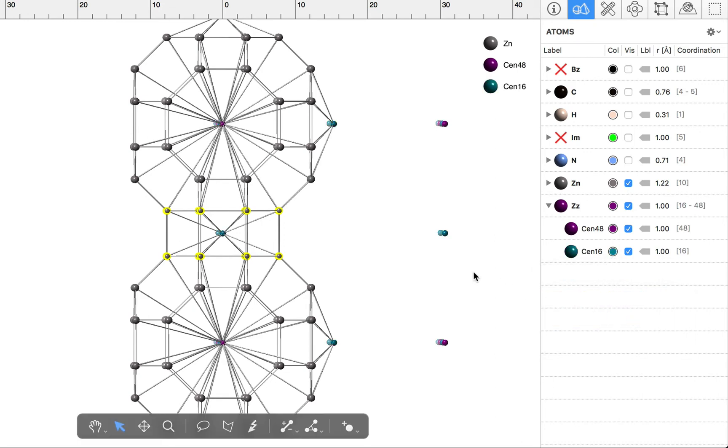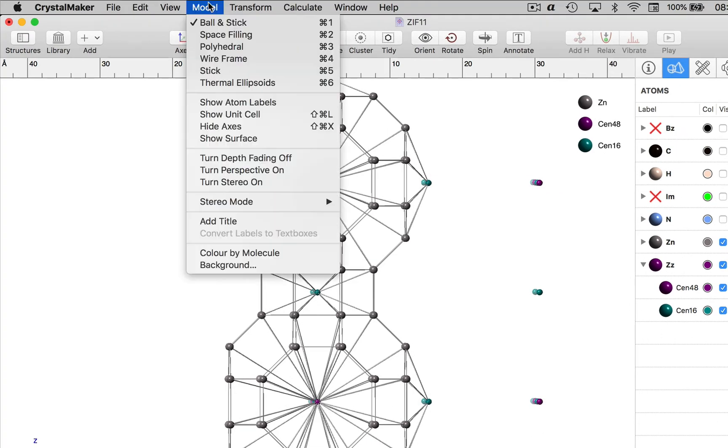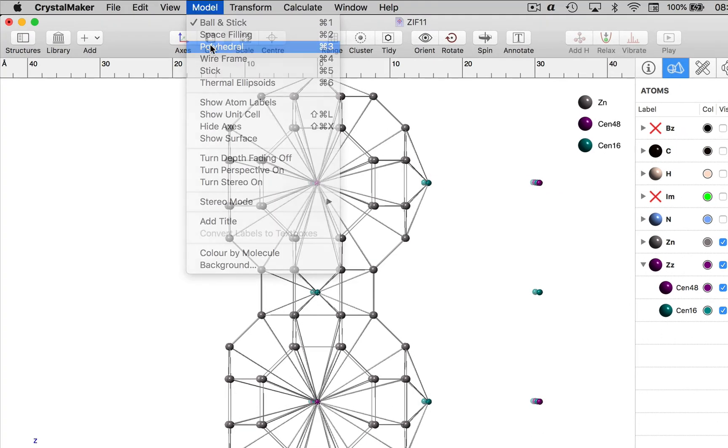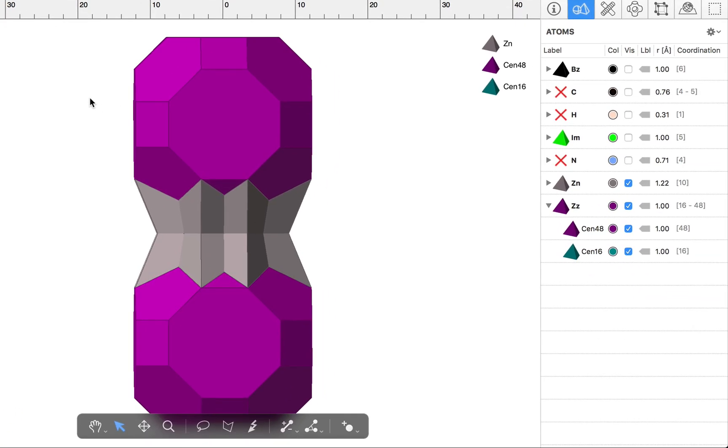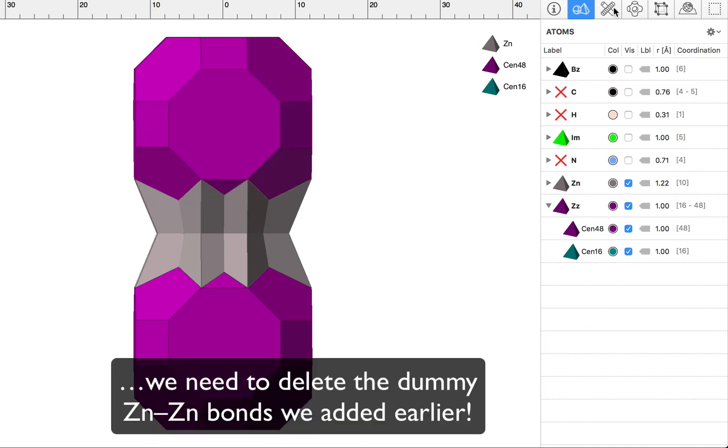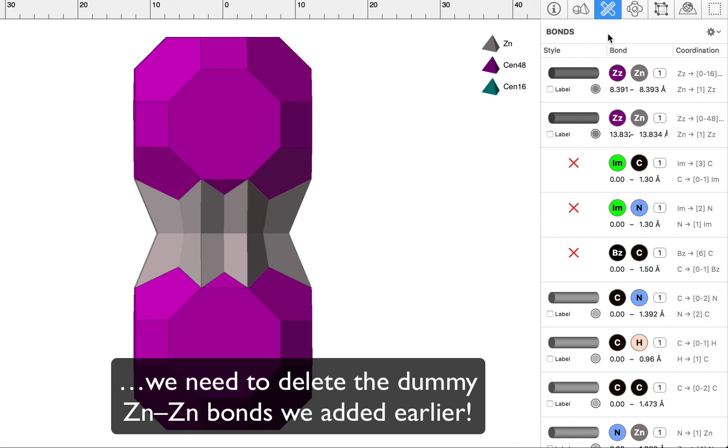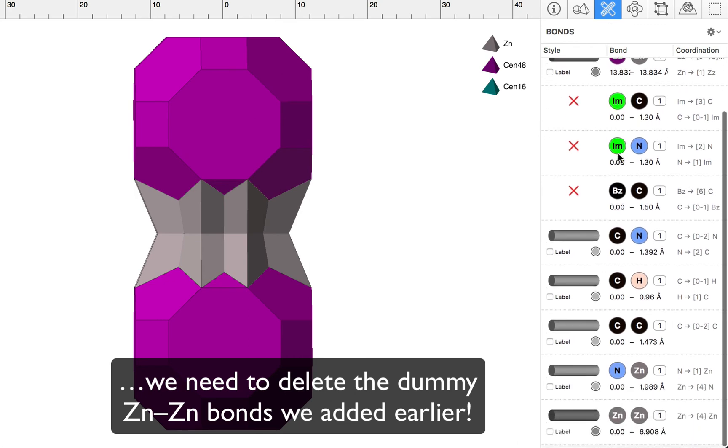And now we can go to a polyhedron model, and we have got some polyhedra. Now we have to be a bit careful here. We've still got those dummy bonds between the zinc atoms. So I'll go to the bonds inspector, and we need to delete the zinc-zinc bonds that we added at the start.